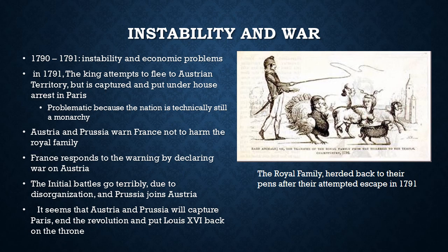But the French army was incredibly disorganized because a lot of their officers had quit or been fired, and so the initial battles went really terribly for France. Prussia soon joined Austria in the war against France. It started to look as if Austria and Prussia were going to capture Paris, end the revolution, and put Louis XVI back on the throne.